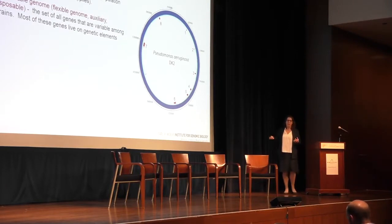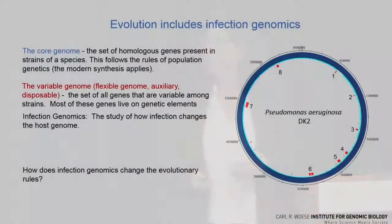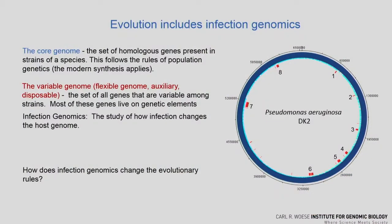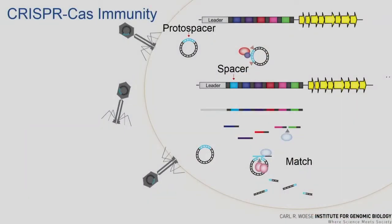We're trying to think about how that changes the way evolution happens and what that changes about predictions you might make about the way evolution is going to go forward, particularly as it relates to some of these big challenges that we're facing. We're thinking about this in terms of what we call infection genomics — the study of how these infectious elements change the genome of their host and change their traits going forward. So how does the idea of infectious genomics change the evolutionary rules?